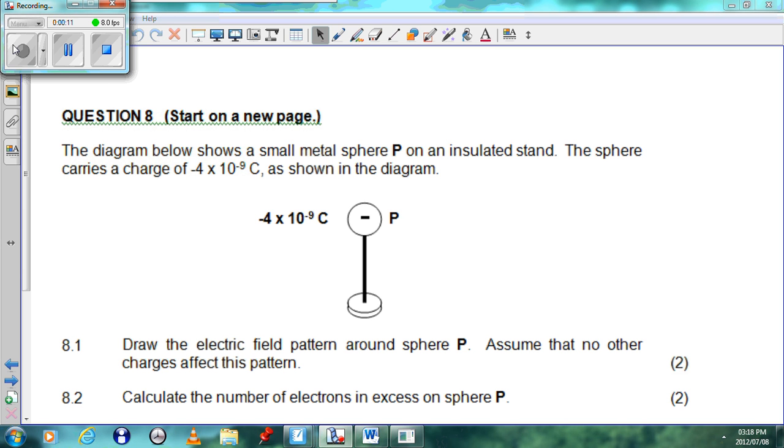If you look at this example we have here, the diagram below shows a small metal sphere P on an insulated stand. The sphere carries a charge of minus 4 times 10 to the minus 9 Coulombs as shown in the diagram.